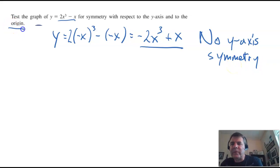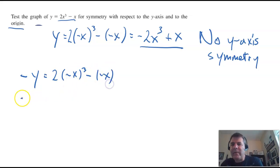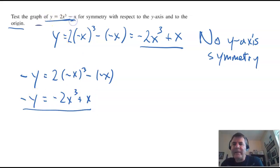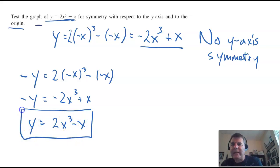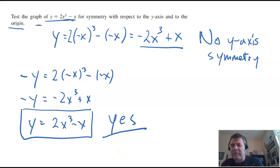Now let's test for symmetry with respect to the origin. That means I replace y with negative y and also replace x with negative x. We get negative y equals negative 2x cubed plus x. If I multiply everything by negative 1, I get y equals 2x cubed minus x. That is the same thing we started with, so there is origin symmetry.